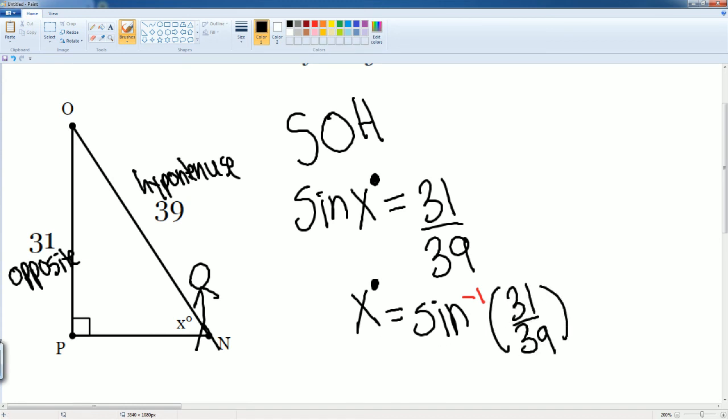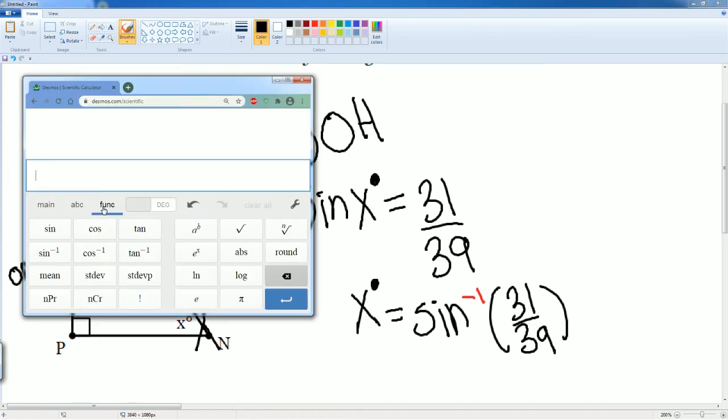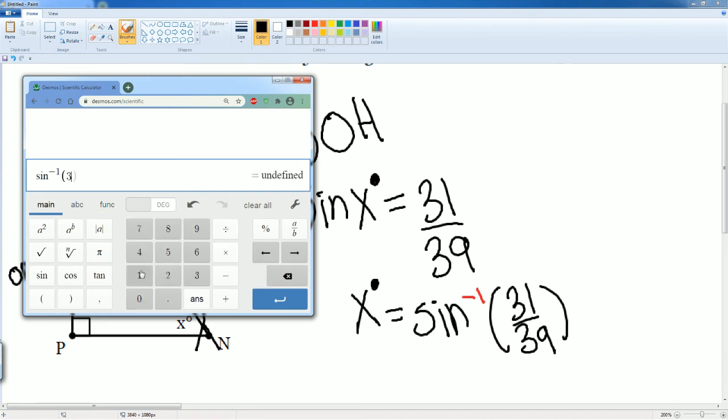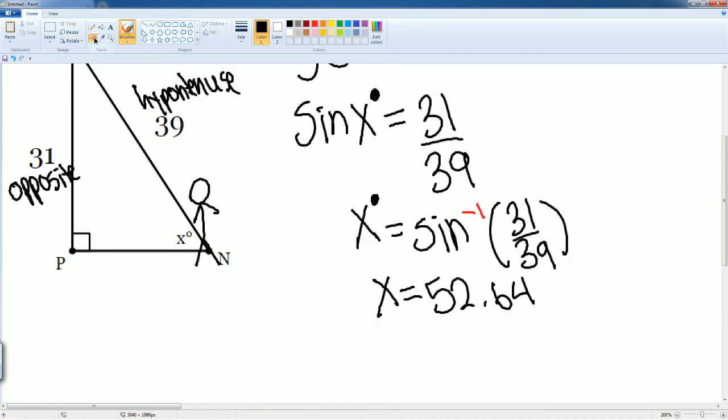Now we can just plug that into the calculator. Again, you have to hit the function key on Desmos scientific to bring it up. Sine inverse, 31 divided by 39. That got us 52.64. X is equal to 52.64. And it is 0.64. So we can just keep it as 52.6. We don't round up. 52.6. That would be our answer.